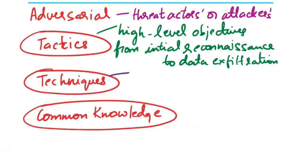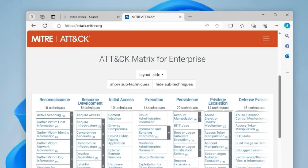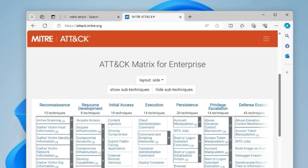Techniques are specific methods or actions that adversaries use to accomplish their objectives within each tactic. Each technique represents a more granular step or procedure seen in real-world cyber attacks. If you search for MITRE ATT&CK or go to attack.mitre.org, it will give you the actual tactics and techniques — a detailed catalog of techniques under each tactic.